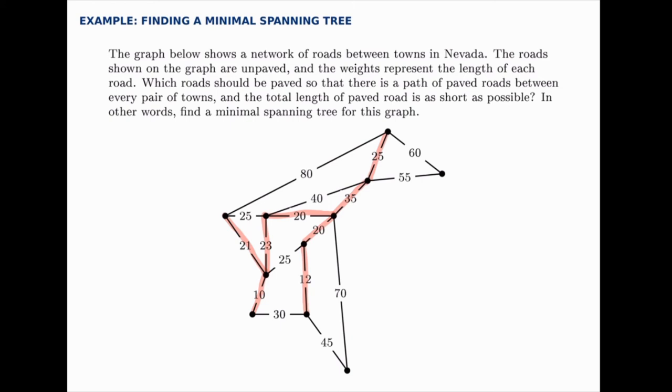Then if we added this 40 again we would have loops here so we won't add that one. The next shortest is a 45 which brings us out here. And then the next shortest is a 55. And at this point we've connected all the cities.